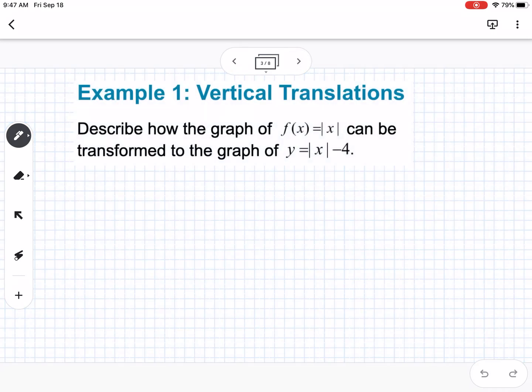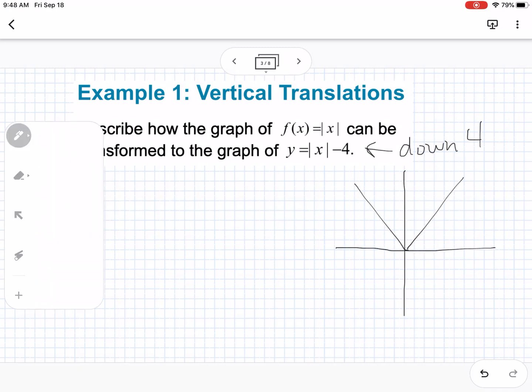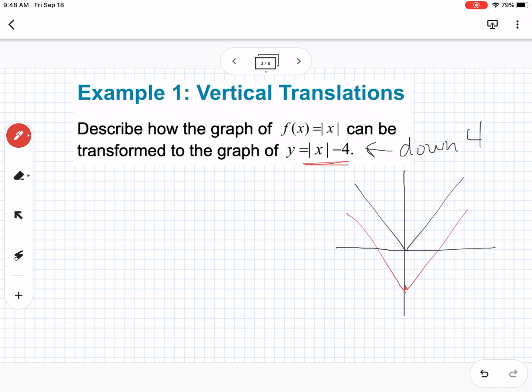Okay, so here's an example. Describe how the graph of f of x equals absolute value of x can be transformed to the graph of y equals absolute value of x minus 4. Okay, so this would just be shifted down 4. So our normal parent function for absolute value looks like that. Let's change colors here. So this graph would be moved 1, 2, 3, 4 would look like that.